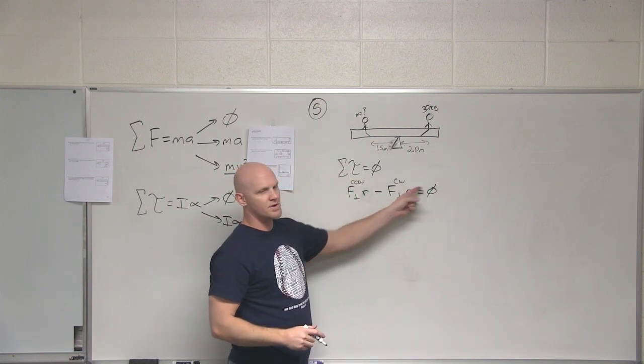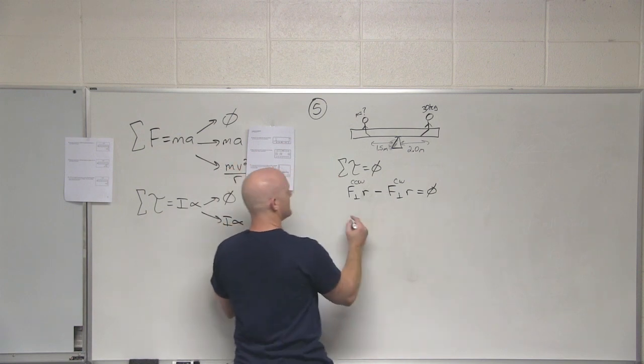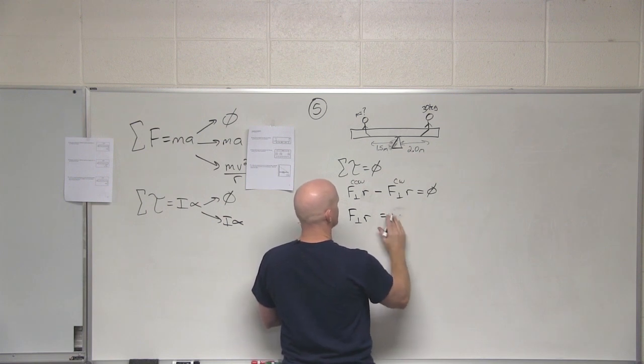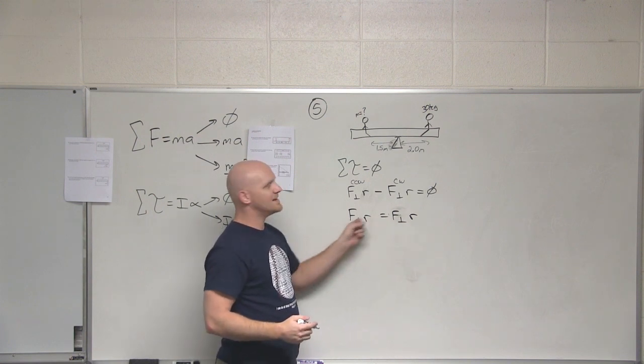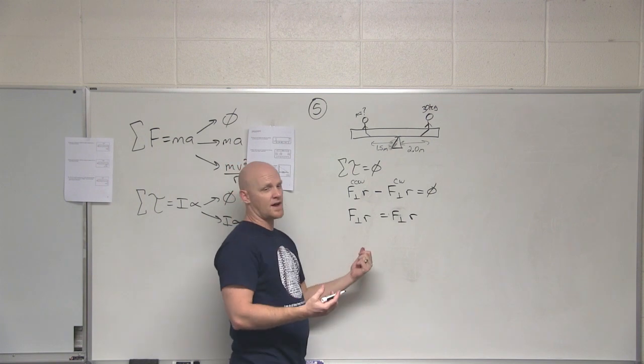Instead of taking this approach, what I often do is just move this over to the other side, and I'll have F⊥R equals F⊥R. I just put the clockwise on one side and the counterclockwise on the other side. It's essentially the same thing as saying the sum of the torques equals zero. I just got to make sure they go on the correct side.